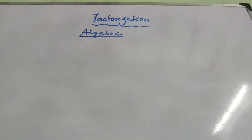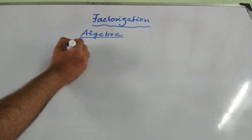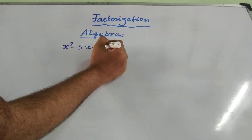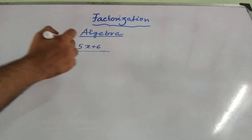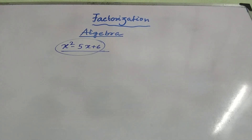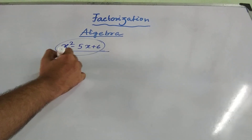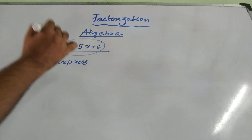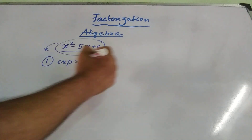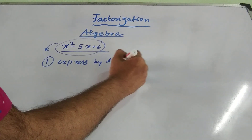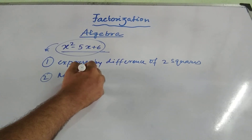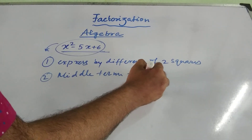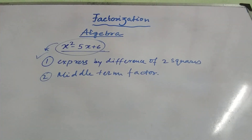The process of finding factors is called factorization. Let us consider the expression x² minus 5x plus 6. I have to find out the two expressions which can divide it. I can do this in two methods: one is to express it by the difference of two squares, and secondly, the middle term factor method.